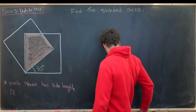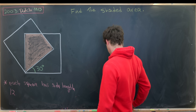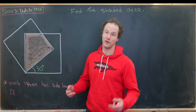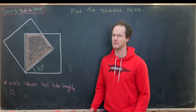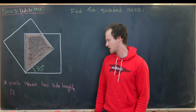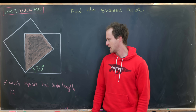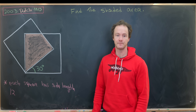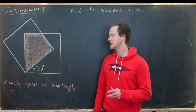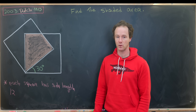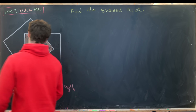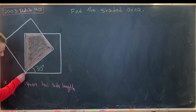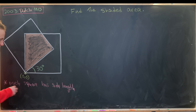So now is your chance to think about the ridiculous way that I'm going to solve this and post it in the comments. What I'm going to do is put this in the Cartesian coordinate plane. This point right here I will make the origin, so this is the point (0, 0). And then this is along the x-axis, making this point right here (12, 0).